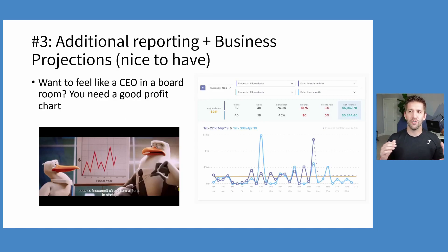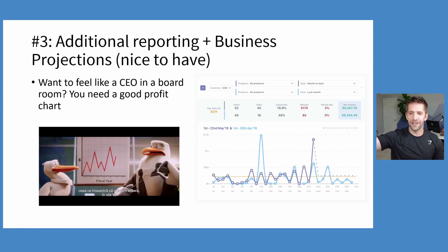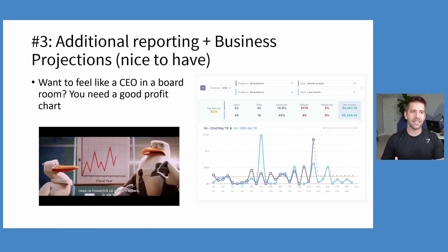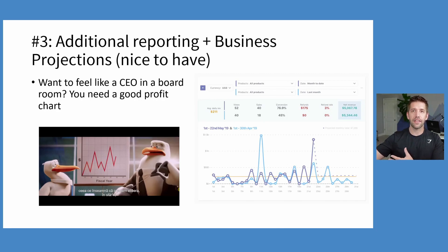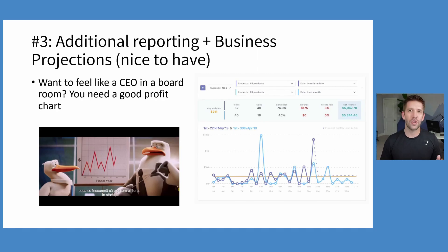Number three is the additional reporting and business projections. If you want to be able to grow your business and have that feel of analytics — knowing what's going on and where you need to go next — this is a cool feature. It can take all your products or a single product and plot it out over time, show what's going to happen likely in the future based on your current run rate, and you can drive some pretty nice data-driven decisions off of that information. Very nice. It's a nice-to-have though. Ultimately you could get this information elsewhere, but it's kind of cool all being in one place.